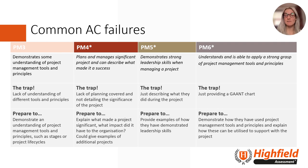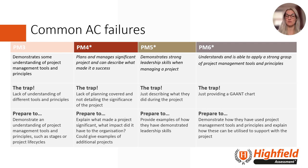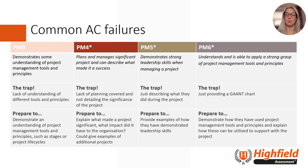PM5 — demonstrates strong leadership skills when managing a project. The trap here is that learners are just describing what they did during the project; they should provide examples of how they demonstrated those leadership skills. PM6 — understands and is able to apply a strong grasp of project management tools and principles. Learners here are simply providing a Gantt chart; they should demonstrate how they have used project management tools and principles and explain how these can be utilised to support the project.